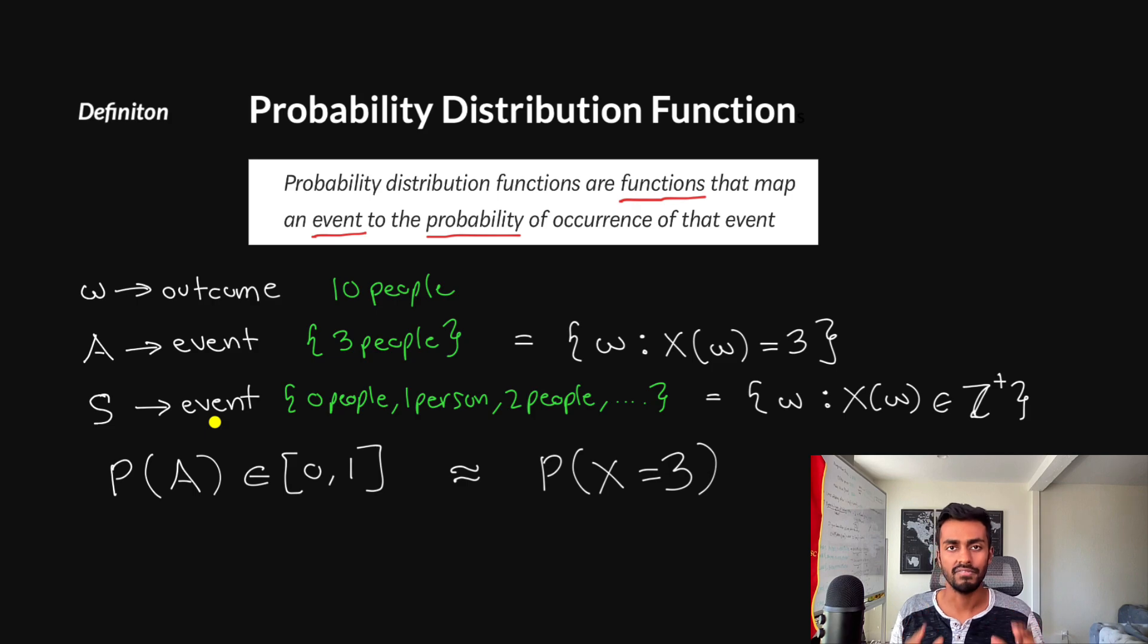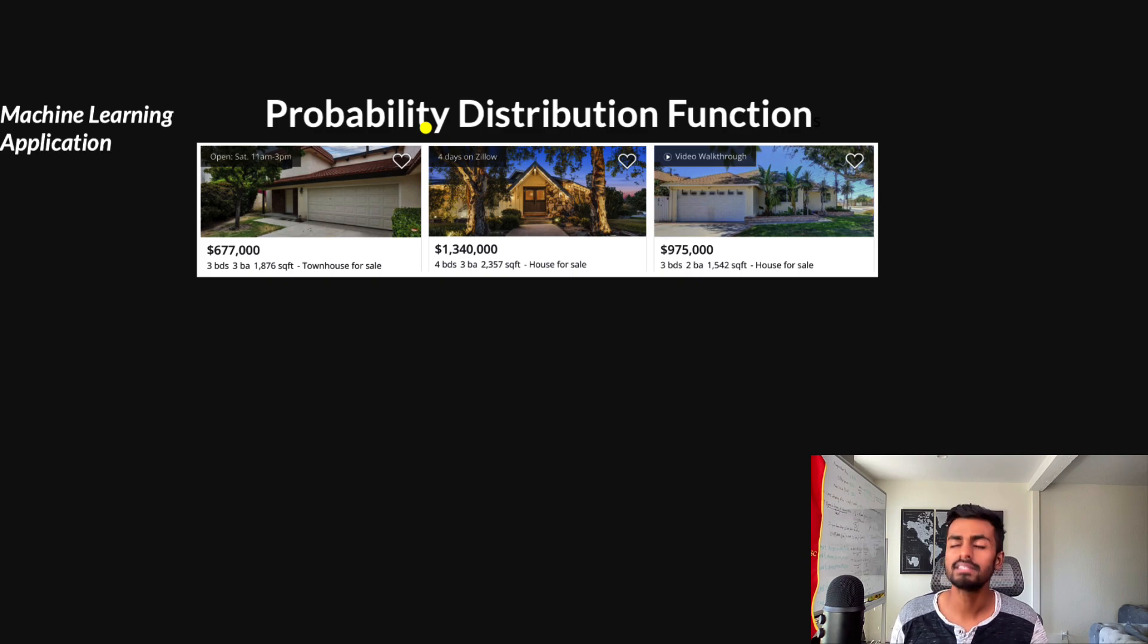So I hope all of this is pretty clear right now. And from now, in our last section, we are going to look at how we can use this or how this entire notation and probability distribution functions are used in the field of machine learning. Let's now conduct another experiment. And this experiment involves randomly going to Zillow.com and randomly choosing one house listing, right? That's our experiment. And we'll conduct this experiment three times. So the first time I did this, I got $677,000. The second case, I got $1.34 million. And the third case, I got $975,000.